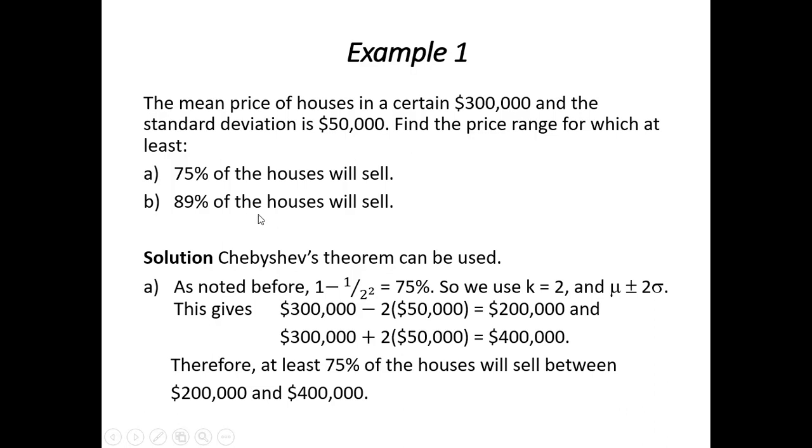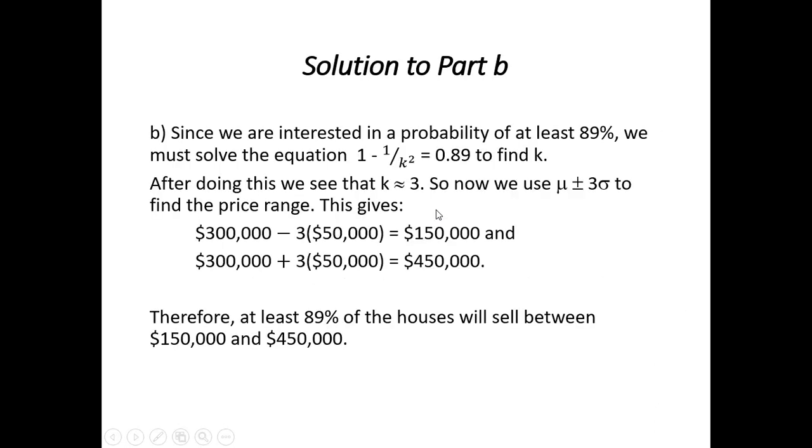Part B is similar, but now we have 89% and we want to find the range. So 89%, what we do is we set 1 - 1/k² equal to 0.89, solve for k, do a little bit of rounding off, and we see that k is approximately 3.